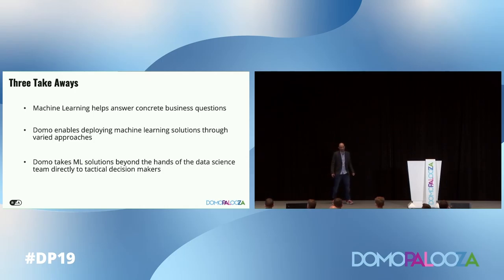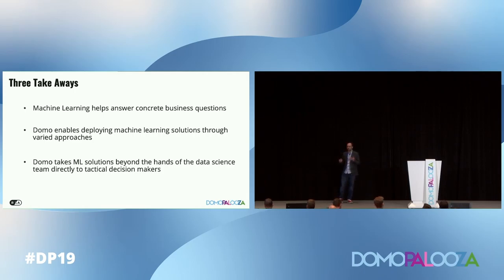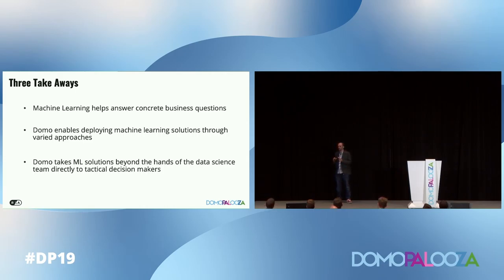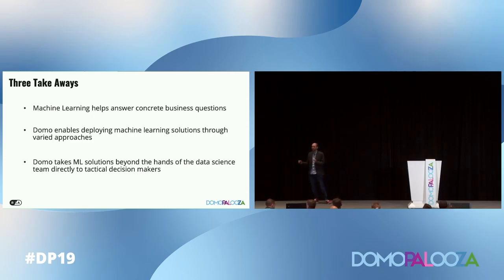As we go through this, there are going to be three key takeaways. The first is that machine learning can help answer concrete business questions. Everyone's here because AI and machine learning are hot topics. A lot of times it seems like a huge mountain to climb, and that you have to build essentially a Skynet system that's going to run your entire business in an automated process. That is not what we're talking about here. What we're going to talk about is finding specific business cases, selecting the best possible machine learning solution to solve those, and then putting that information in the hands of the users.